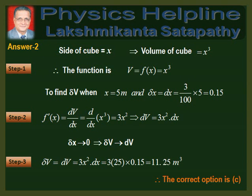In question 2, the volume of a cube of side x is V = x³. In the first step, we write the function as V = f(x) = x³. We are required to find the change in volume delta V when x = 5 meters and it increases by delta x = dx = 3% of 5 meters = 0.15 meters. In the second step, dV/dx = 3x², which implies dV = 3x² · dx. When delta x is very small, delta V ≈ dV = 3x² · dx. In the third step, putting the values and simplifying gives delta V = 11.25 meter cube. Therefore, the correct option is C.